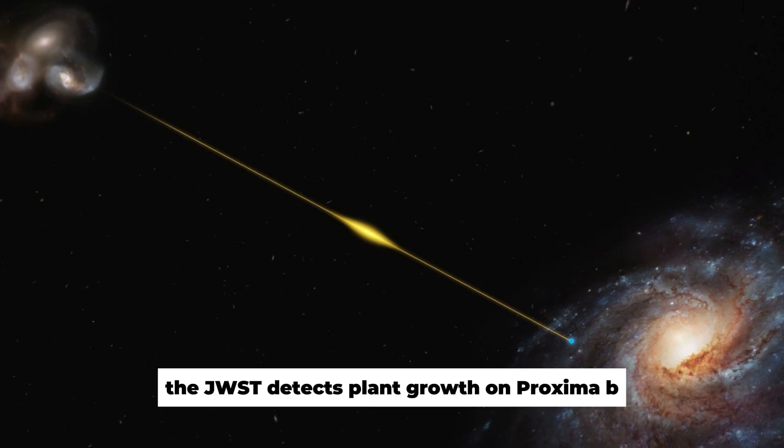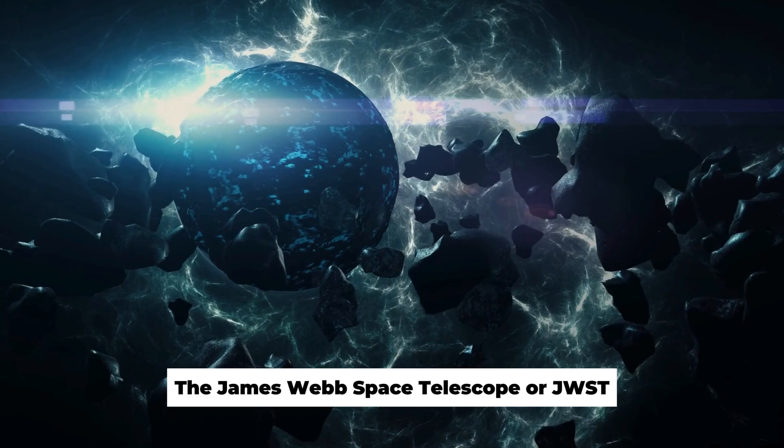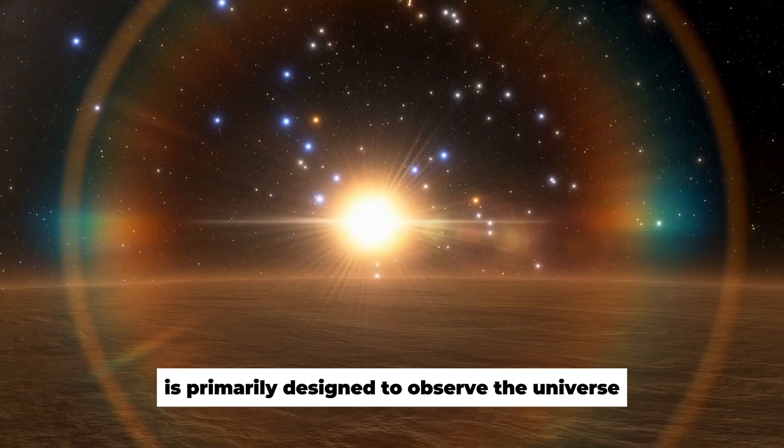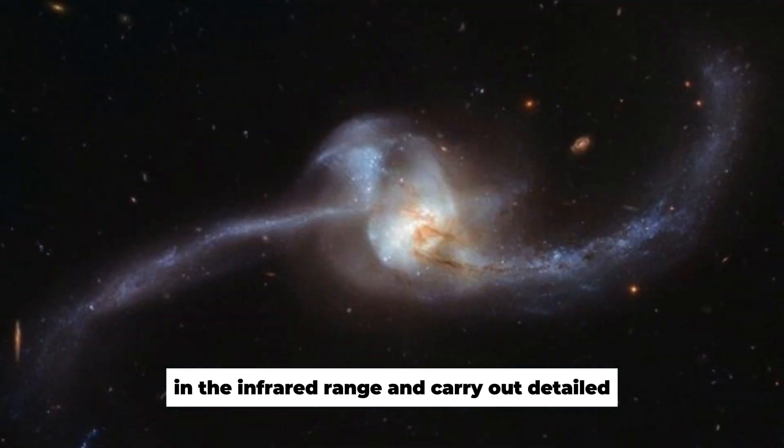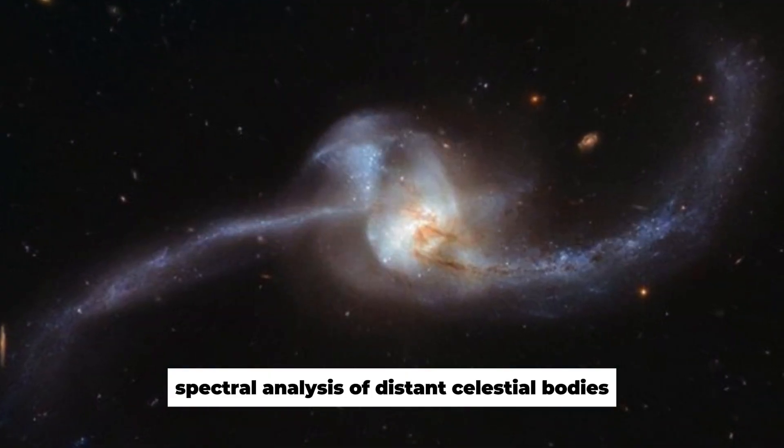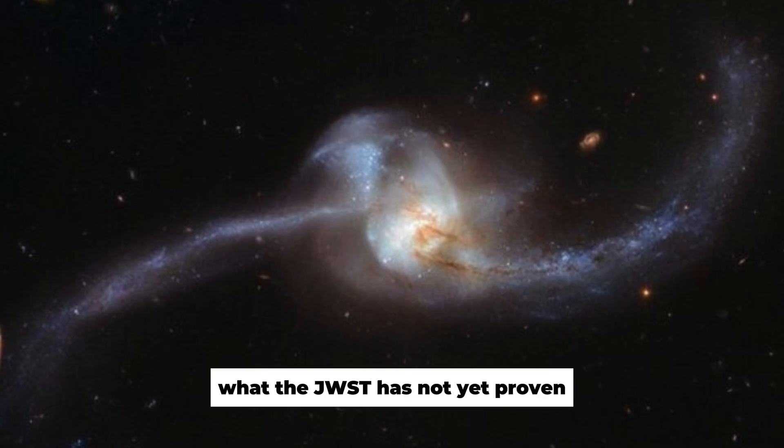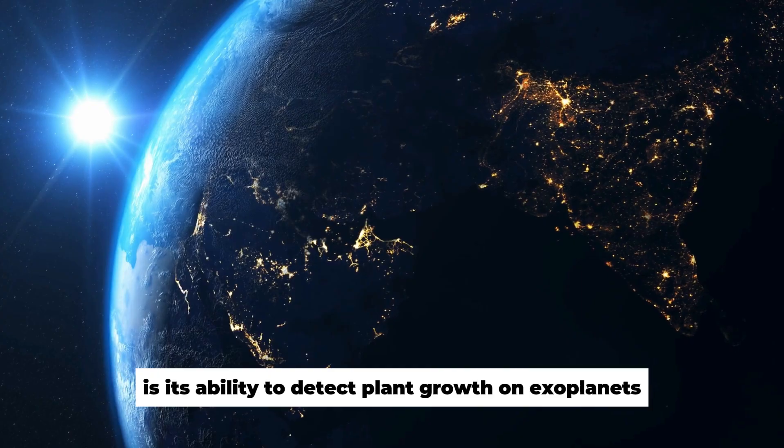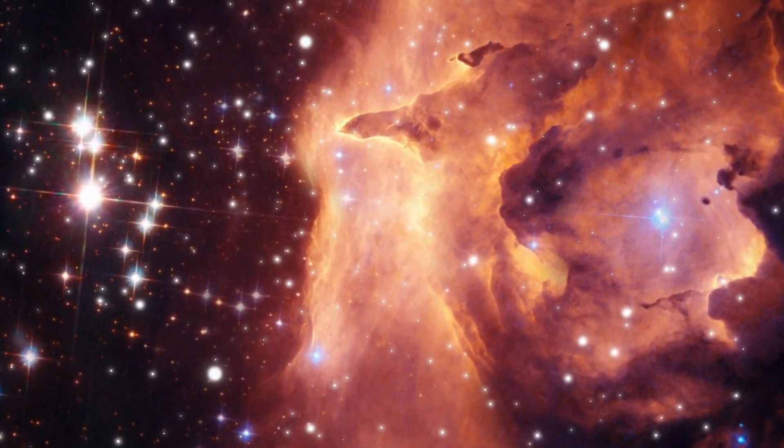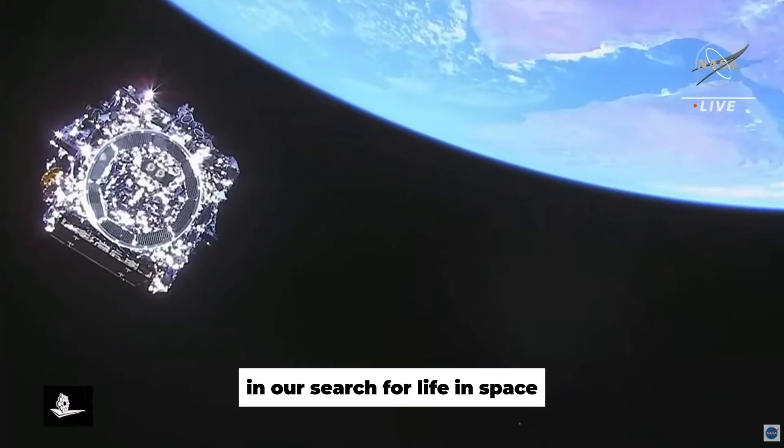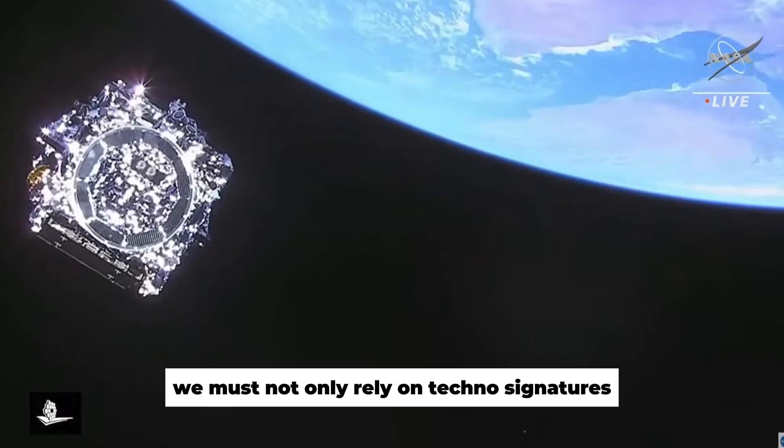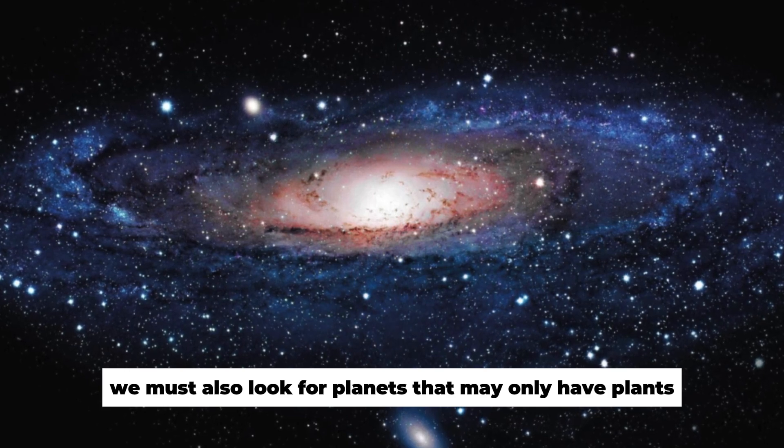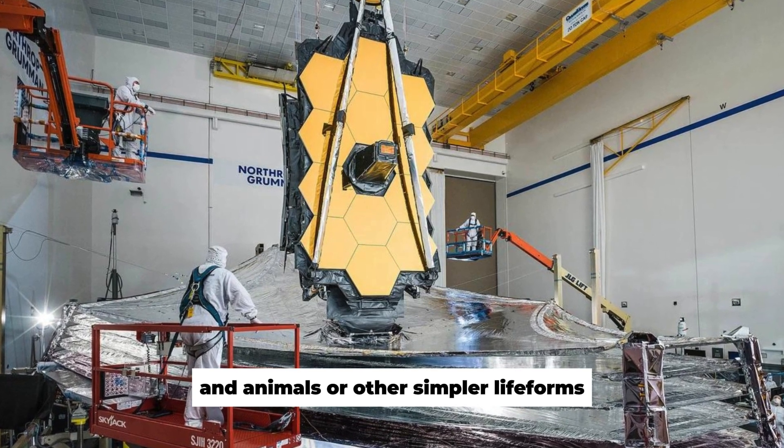The JWST detects plant growth on Proxima b. The James Webb Space Telescope is primarily designed to observe the universe in the infrared range and carry out detailed spectral analyses of distant celestial bodies. What the JWST has not yet proven is its ability to detect plant growth on exoplanets, but it does have the potential to do this. In our search for life in space, we must not only rely on technosignatures and the emissions of highly advanced species. We must also look for planets that may only have plants and animals, or other simpler life forms.